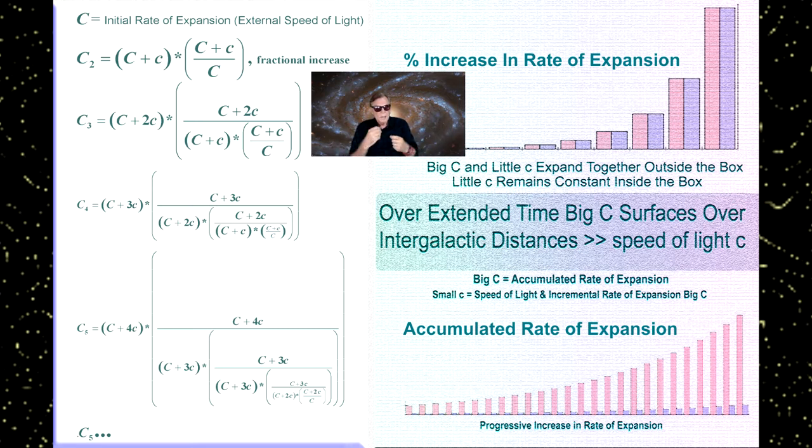So Einstein's false notion of gravitational redshift is actually the result of differential rates of expansion between any two points, as measured outside the space-time box, because dimensions are fixed within it.